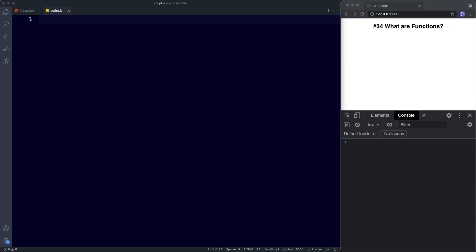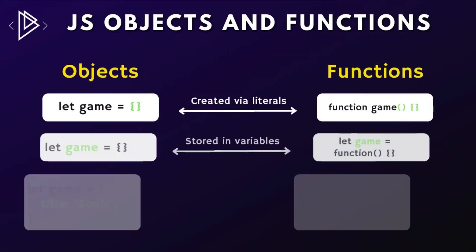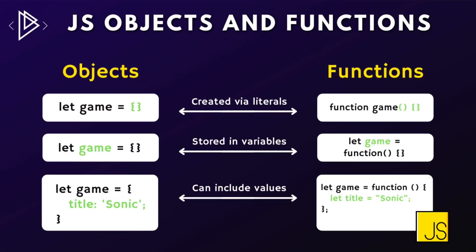That basically means that anything we can do with objects — and we'll look at objects in detail a bit later on — we can do with functions. We can create a literal object, we can create a literal function. Objects can be stored in variables, functions can be stored in variables. We can include properties and values inside objects, and we can do the same in functions. Remember, the data type for a function is an object. We learned that way back in our lesson on data types in Lesson 7.